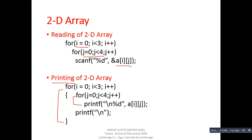We can also use the same nested loop for printing the 2D array. Here the outer loop and inner loop are used together. To separate each row we use a printf statement that displays a newline ('\n') on the console. So if we want to read a 2D array we use two loops, and if we want to print a 2D array we also use two loops.